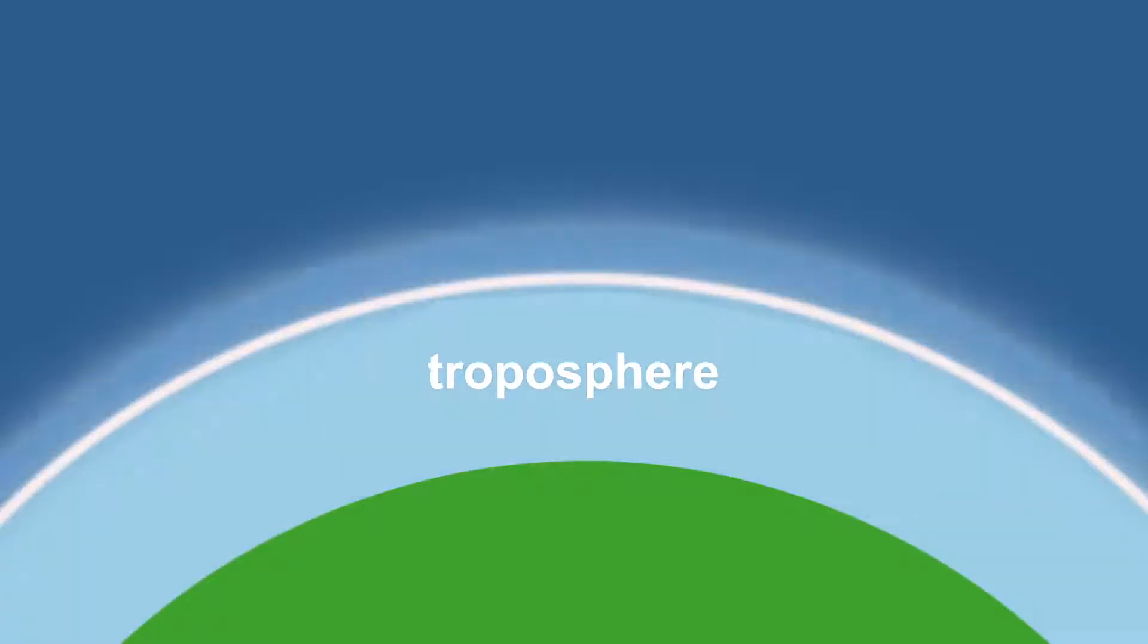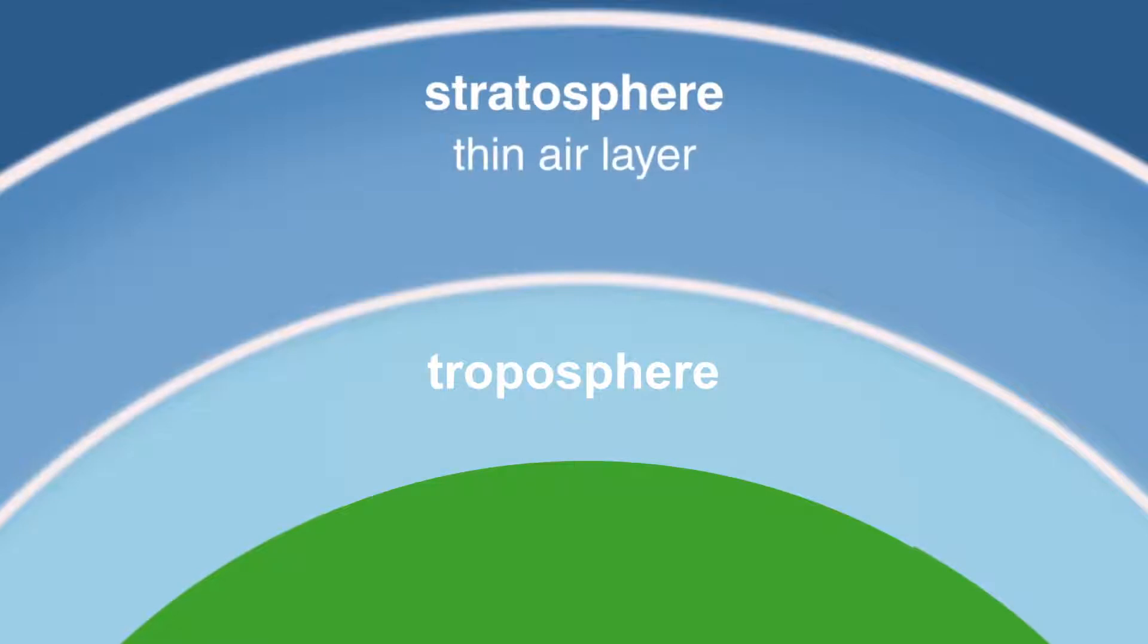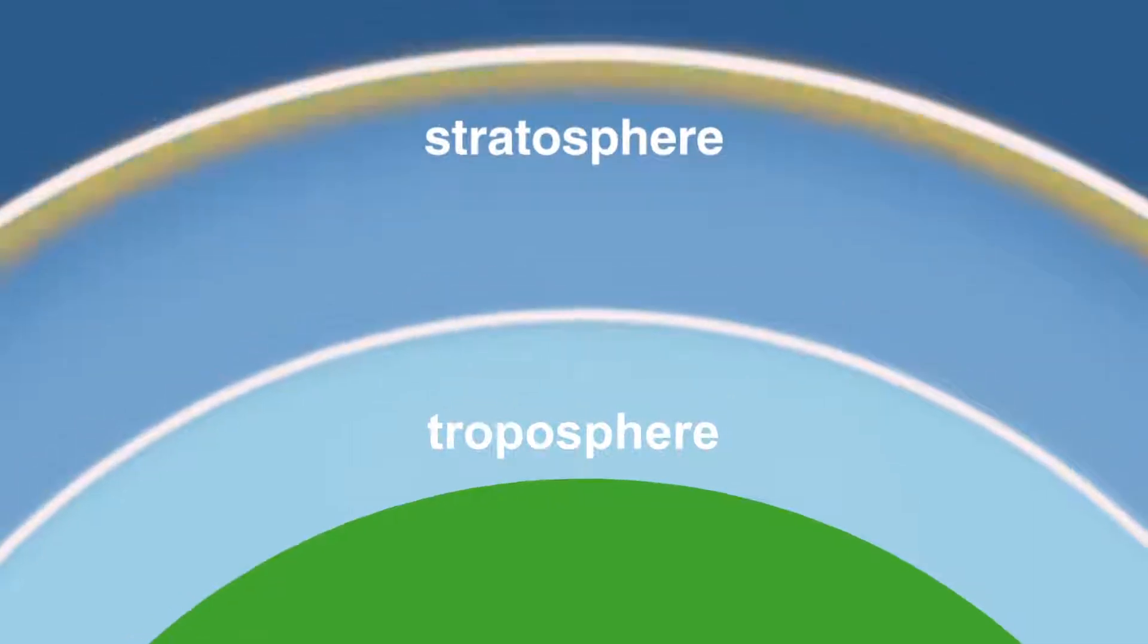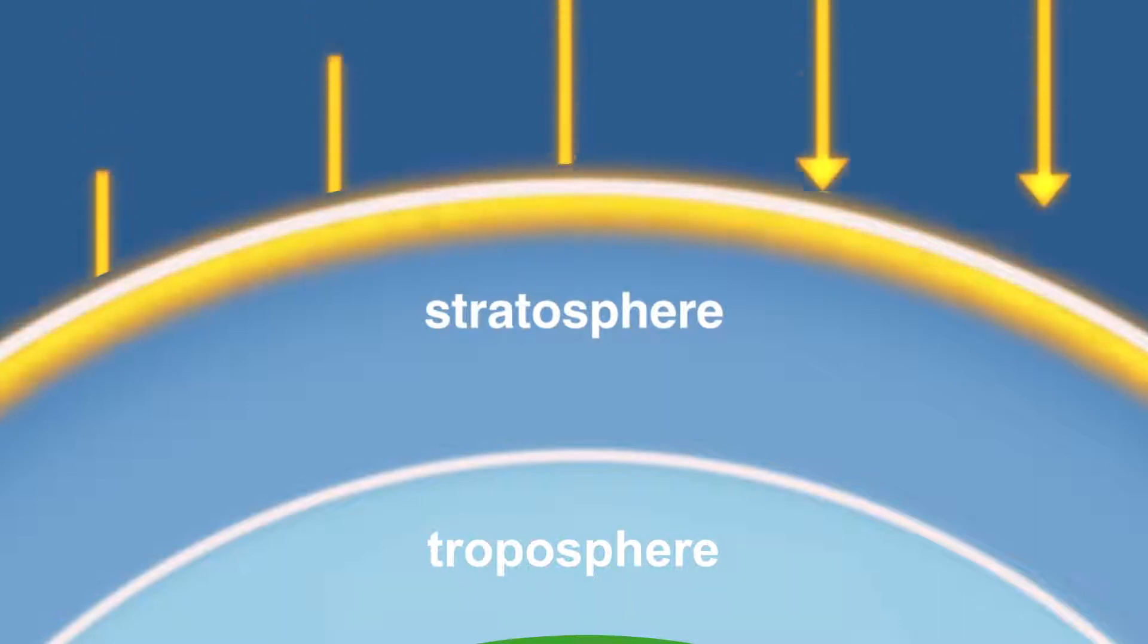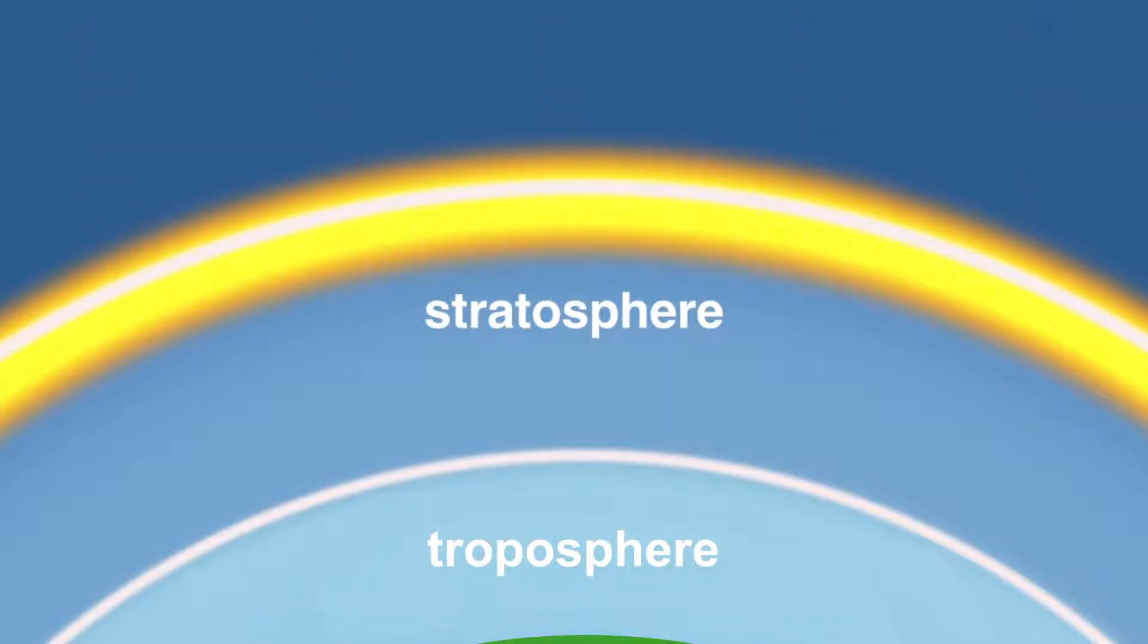Above the tropopause we have the stratosphere. This is a layer of thin air which is hot on top because it's heated from above by ultraviolet radiation absorbed by the good ozone, and cold underneath, making it dynamically stable. Contrast this with the turbulent troposphere.